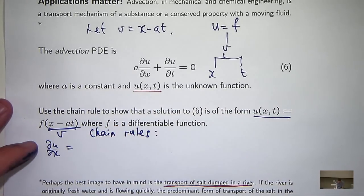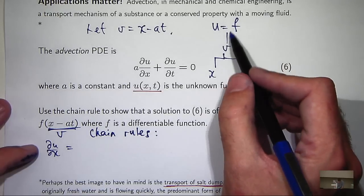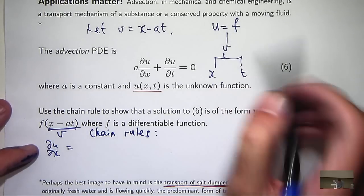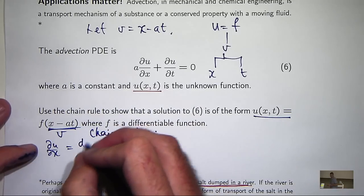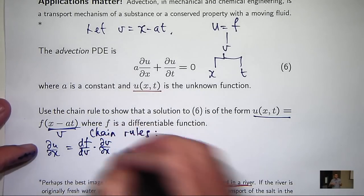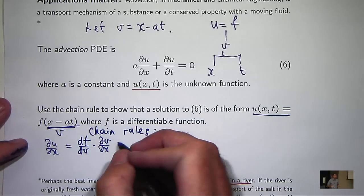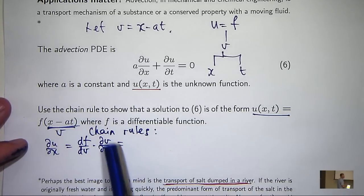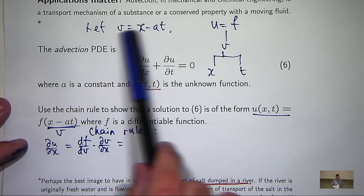So du/dx, that's going to be df/dv times dv/dx. All right, so I don't know what f is, but I can calculate dv/dx—it's going to be 1.